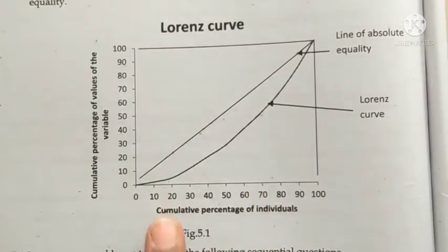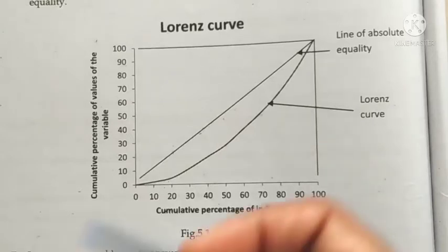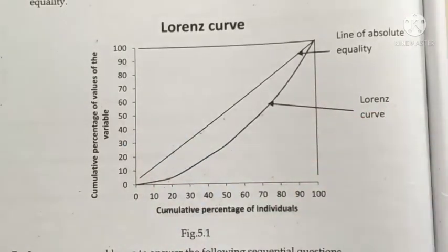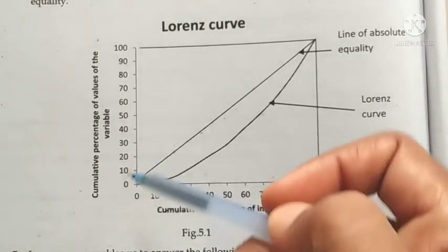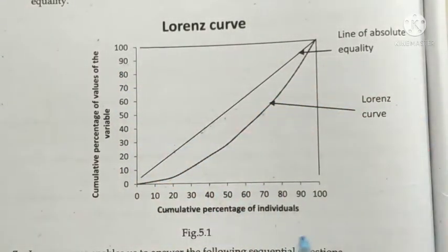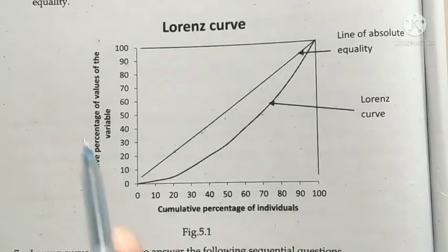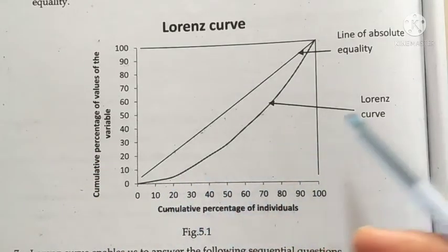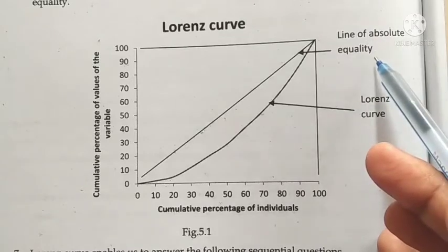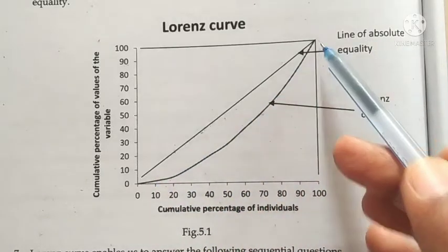On the x-axis, plot points: 0, 10, 20, 30, 40, 50, 60, 70, 80, 90, 100 — representing cumulative percentage of individuals. On the y-axis, similarly plot: 0, 10, 20, 30, 40, 50, 60, 70, 80, 99, 100 — representing cumulative percentage of values of the variable. The resulting figure shows the Lorenz Curve and the line of absolute equality.